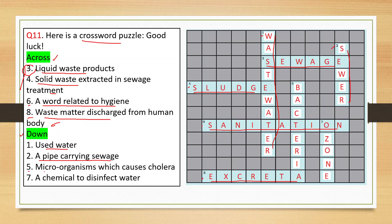Down number 5 - microorganism which causes cholera - the answer is bacteria, B-A-C-T-E-R-I-A. Down number 7 - chemical to disinfect water. We can use chlorine or ozone, but since the letter O is already placed in the crossword, the answer here is ozone, O-Z-O-N-E.